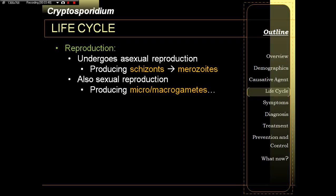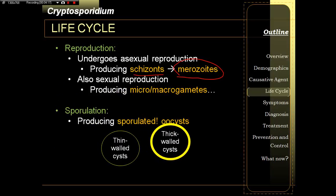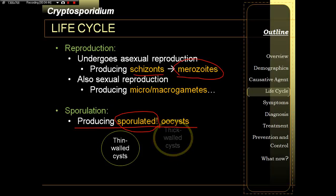Inside the small intestine, cryptosporidium undergoes both asexual and sexual reproduction. Asexual reproduction happens through schizogony, producing daughter merozoites. Sexual reproduction makes use of micro and macro gametes, and during fertilization they produce sporulated cysts, which are already infective. There are two types of cysts: thick-walled cysts, which exit through the stool, and thin-walled cysts, which re-infect the host — making it capable of internal auto-infection.